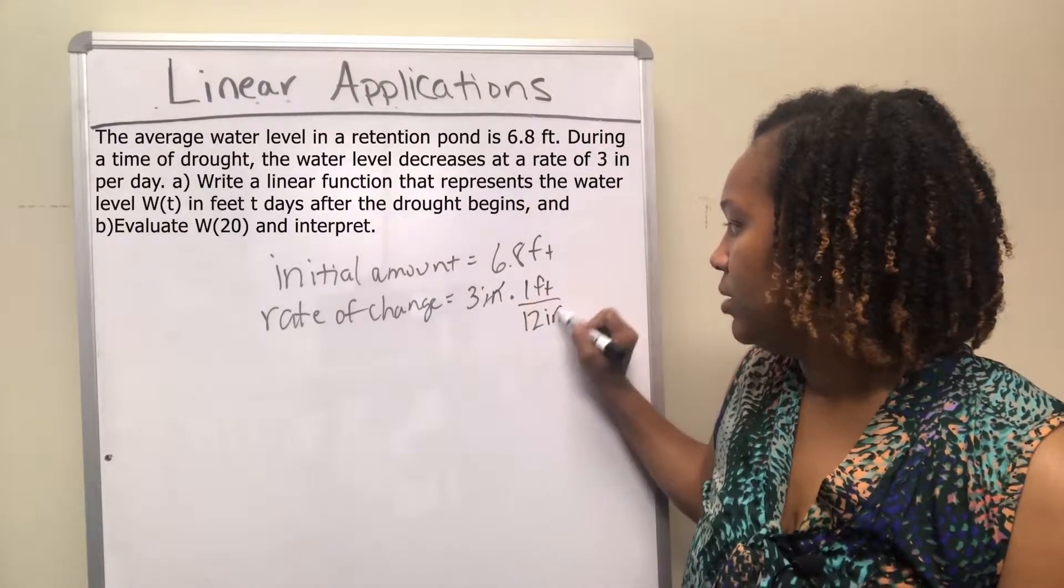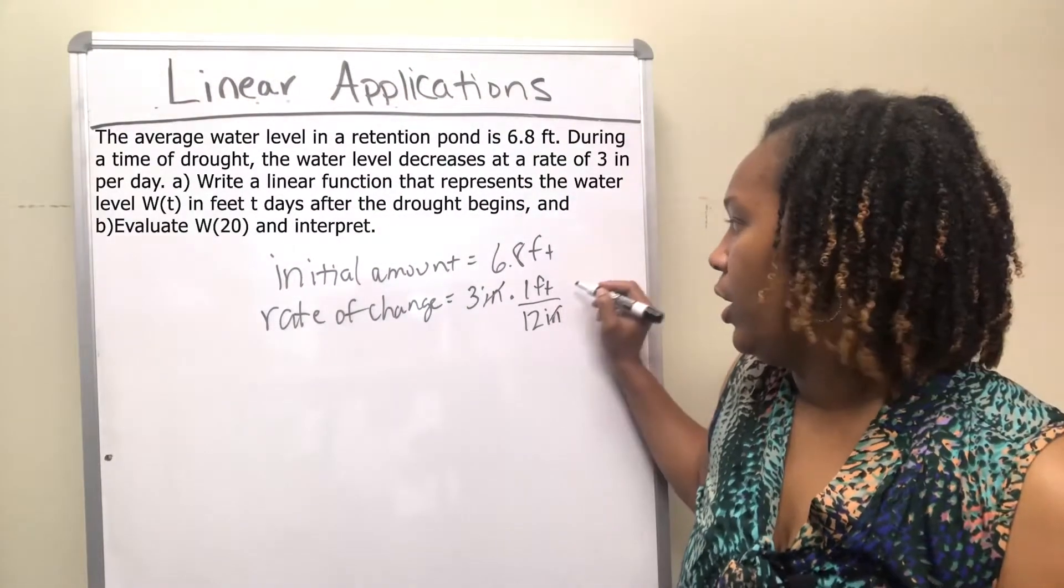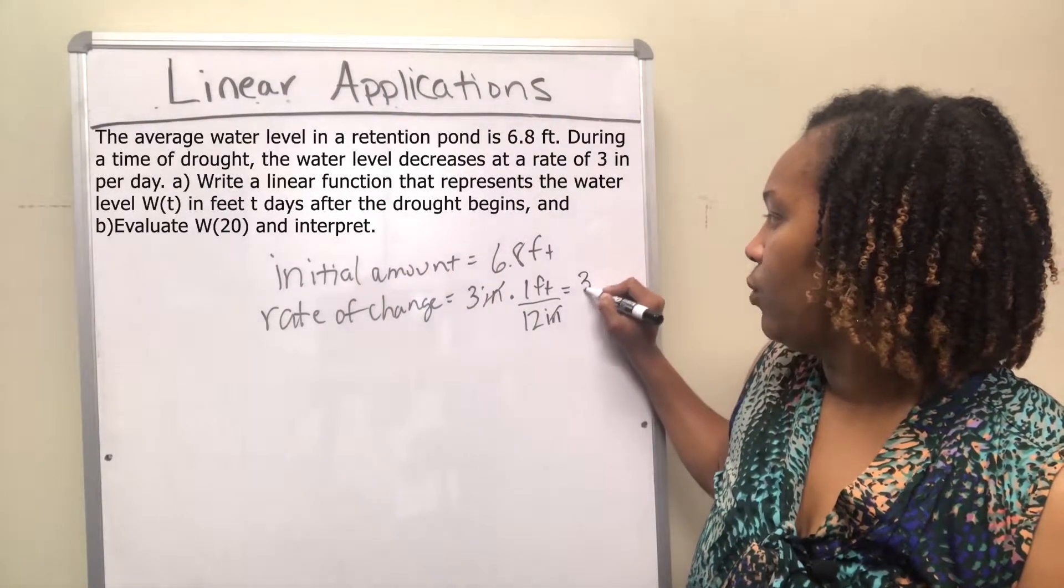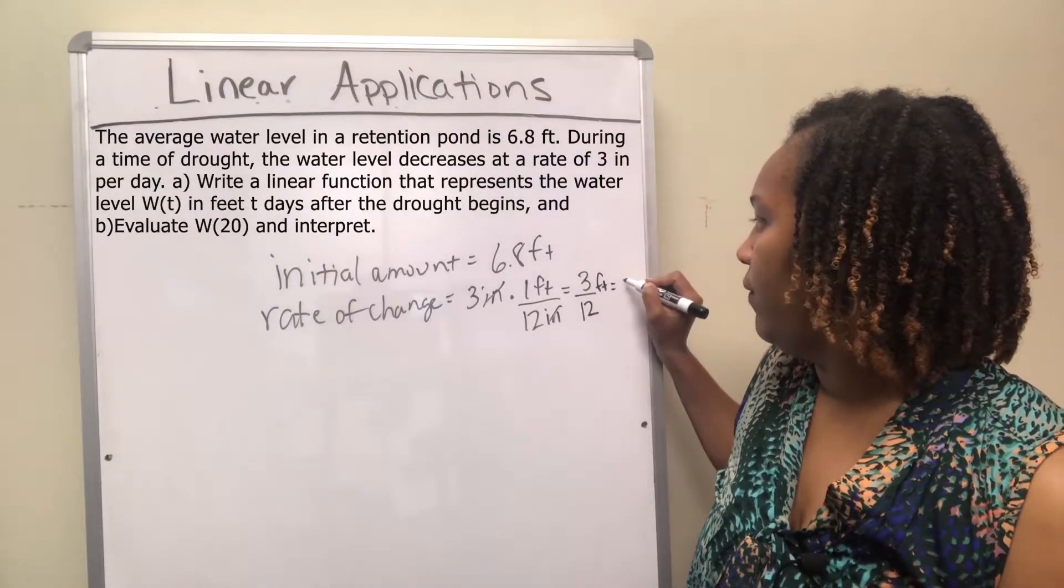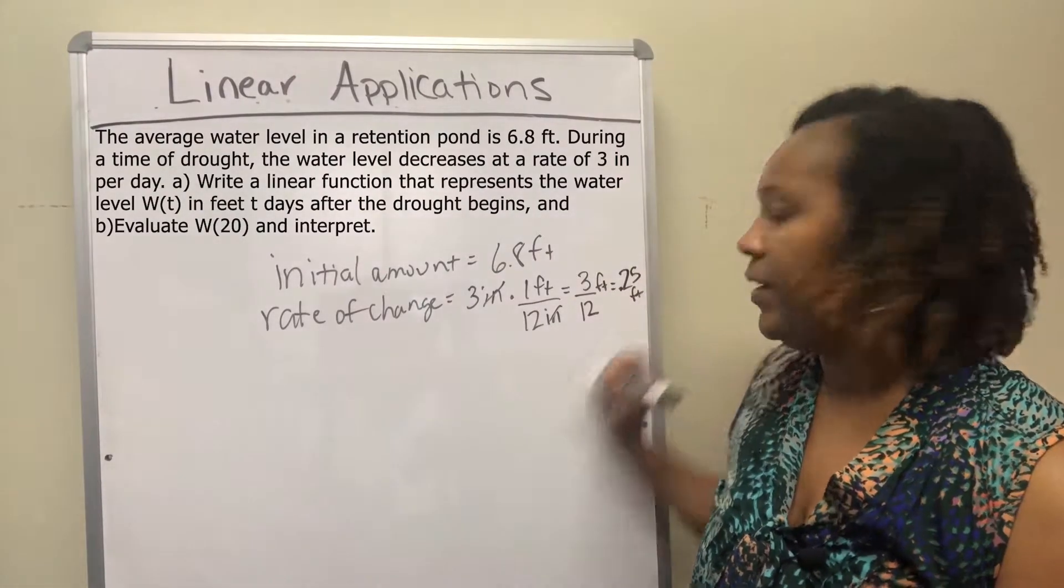So you want your inches to be in the bottom so those can cancel, and your answer will be left in feet. So you'll have 3 over 12 feet, which is equal to 1 fourth, which is 0.25 feet.